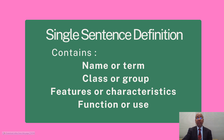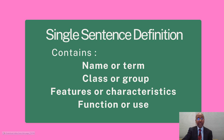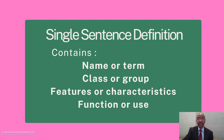It must have all the four parts of a definition. They are: the name or the term of the object; the class or group it belongs to; the features or characteristics of the object; and finally, the function or the use of it.